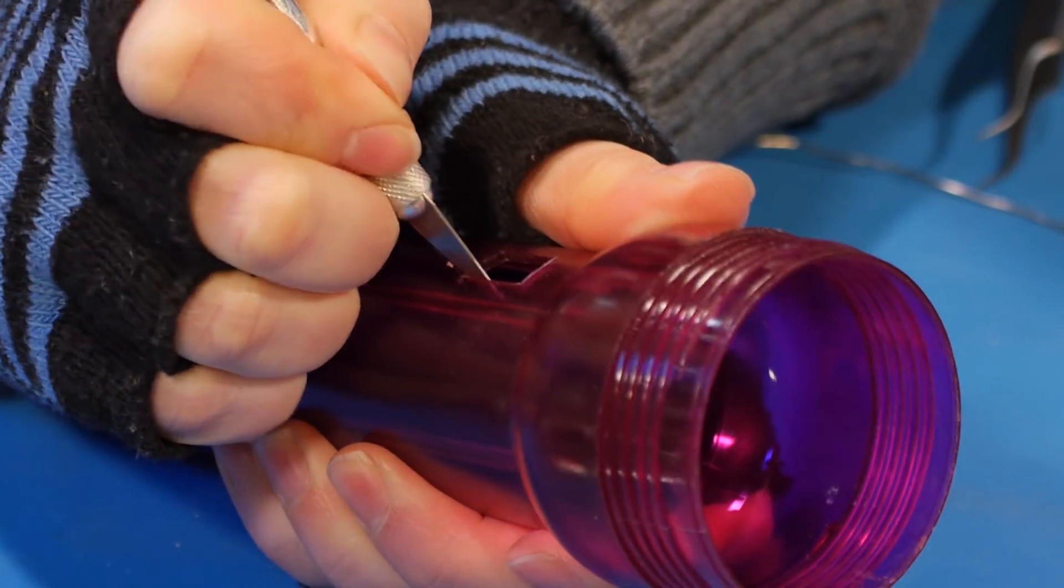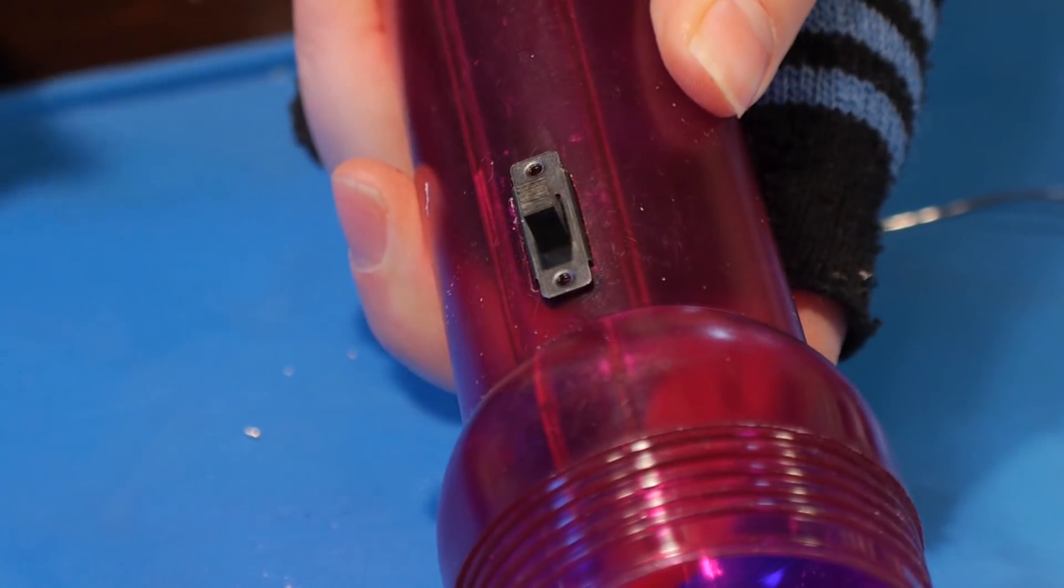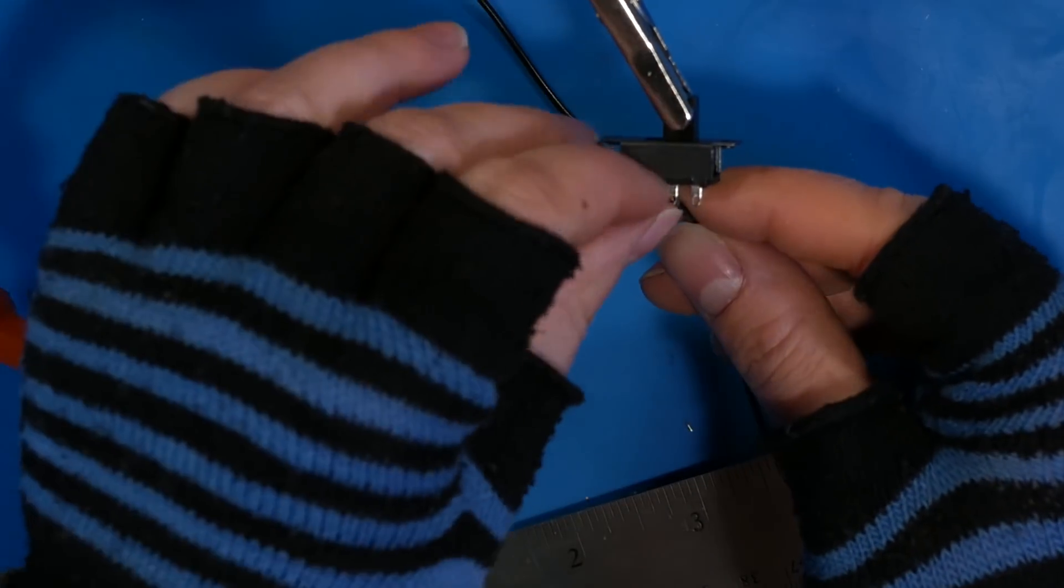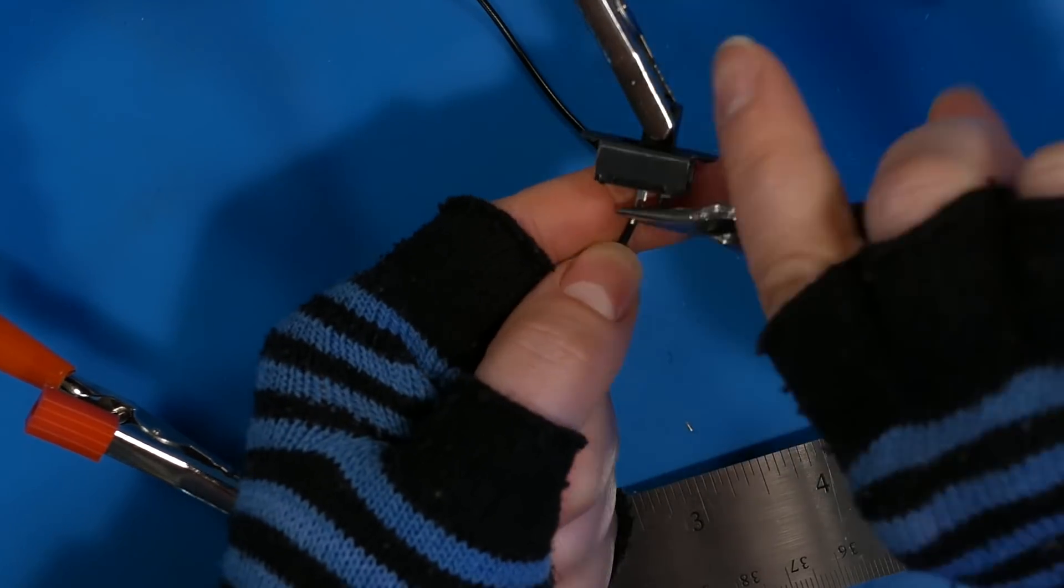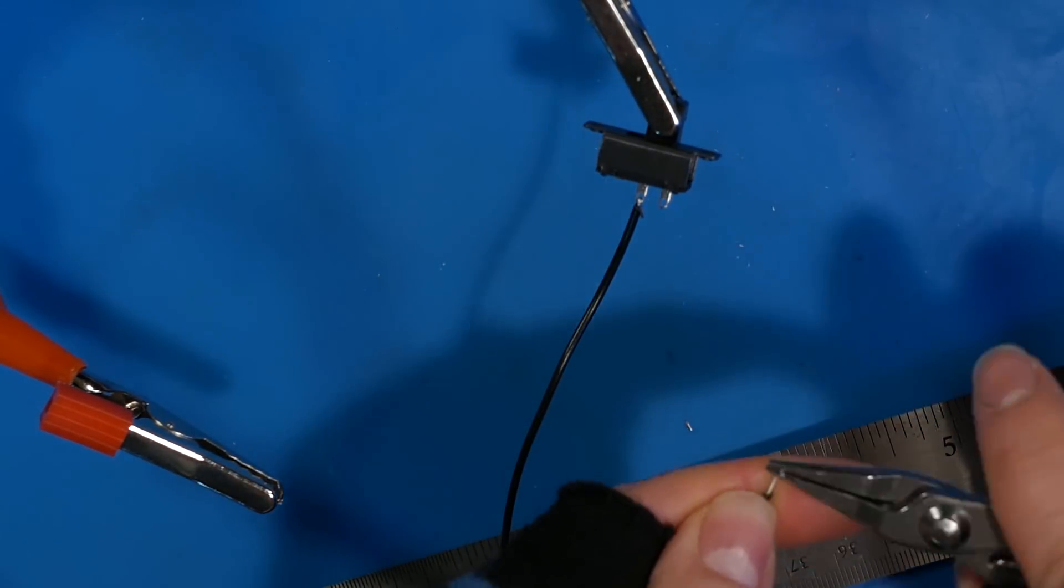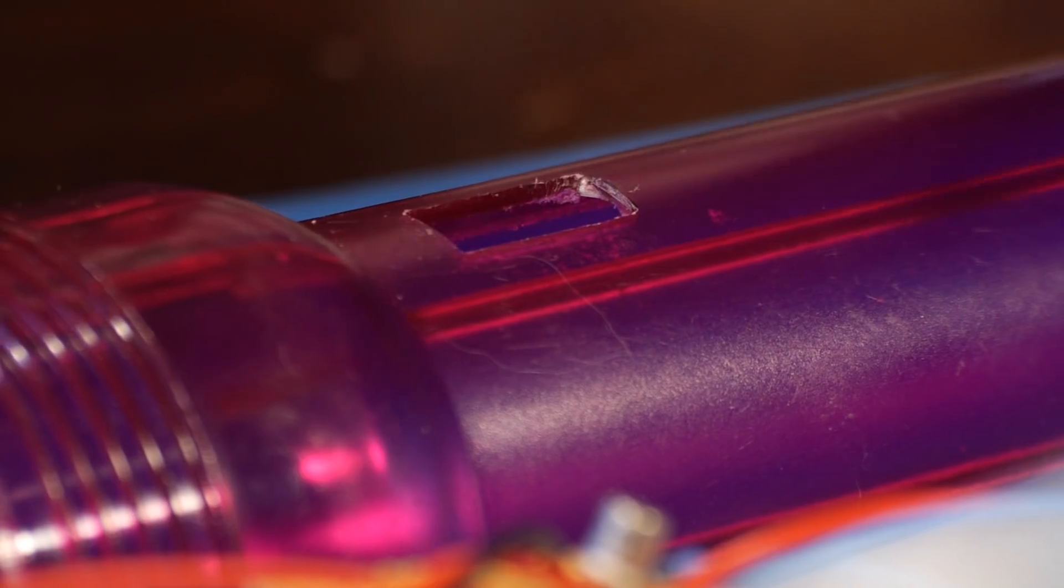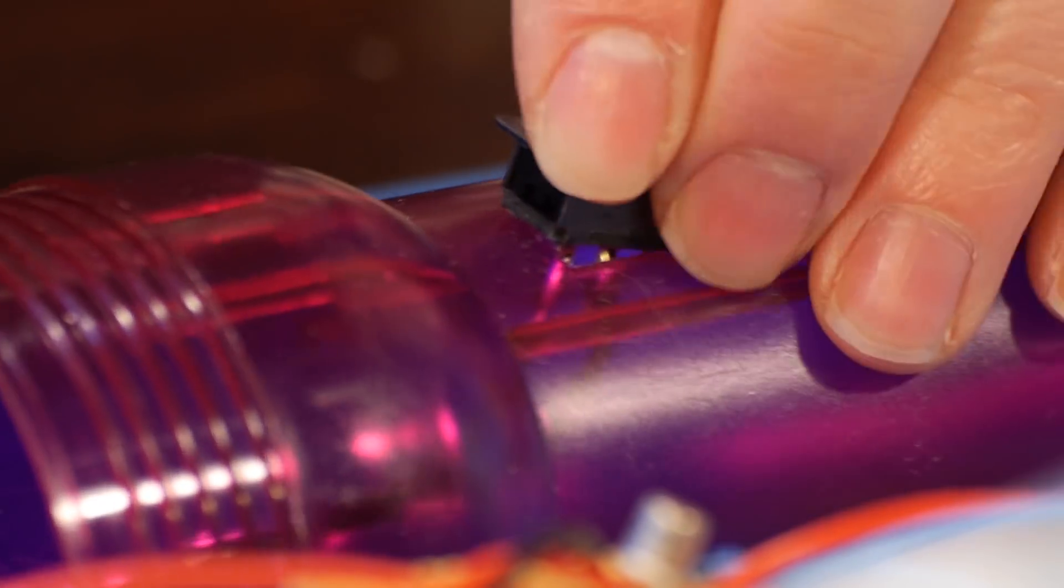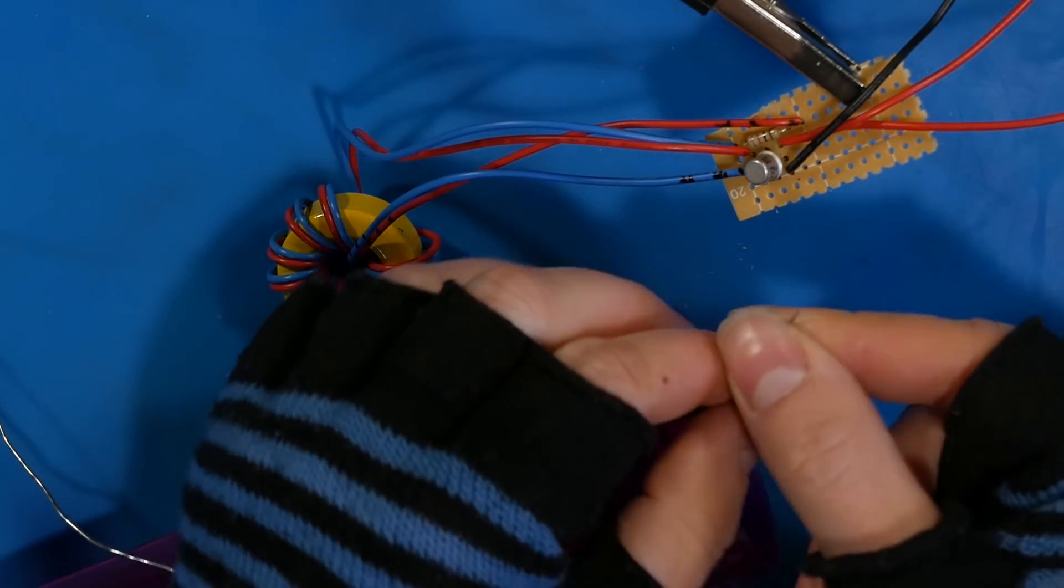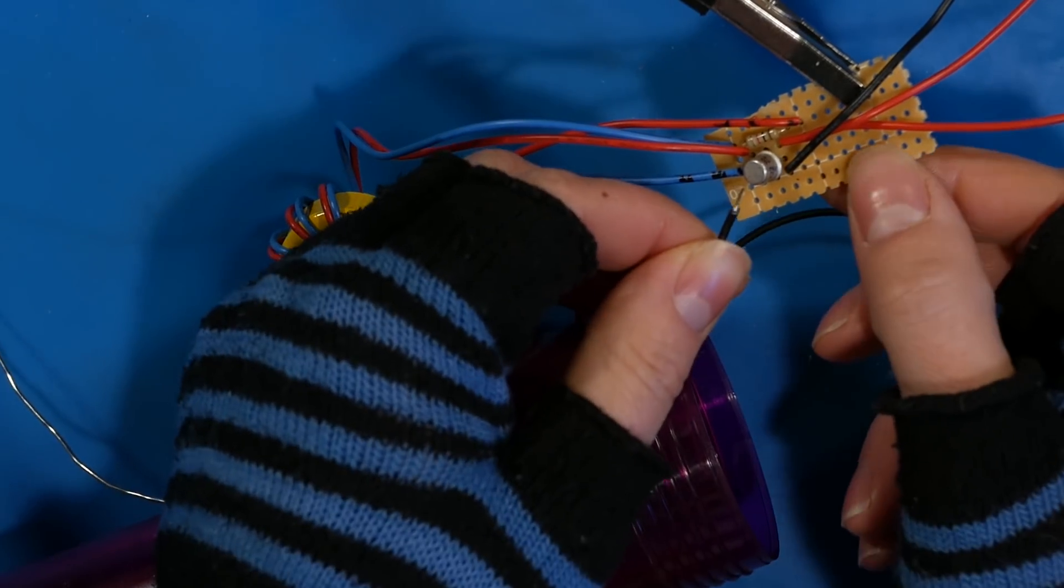Next, cut a hole in the side of your flashlight big enough for your switch. Cut two wires and solder them to the switch. Thread the wires through the hole in the side of the flashlight, and we're going to solder the shorter wire or one of the wires to the emitter of the transistor.